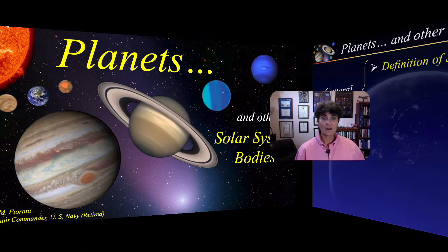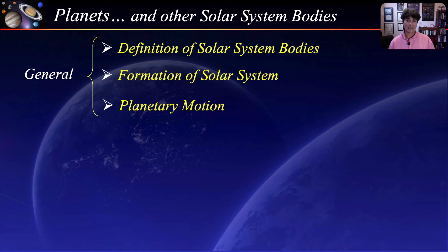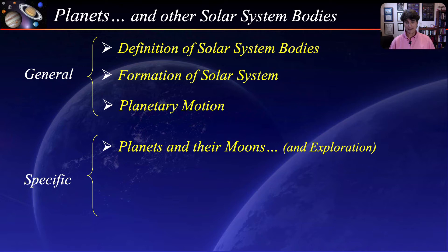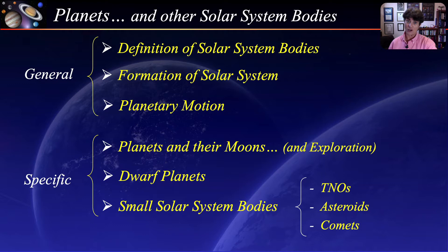We will start our general information with defining the various solar system bodies, then talk about how our solar system formed and briefly mention planetary motion. We will take a closer look at each individual planet and some of their moons, highlight spacecraft missions to the planets, continue with dwarf planets, and finish with other solar system bodies including trans-Neptunian objects, asteroids, and comets.